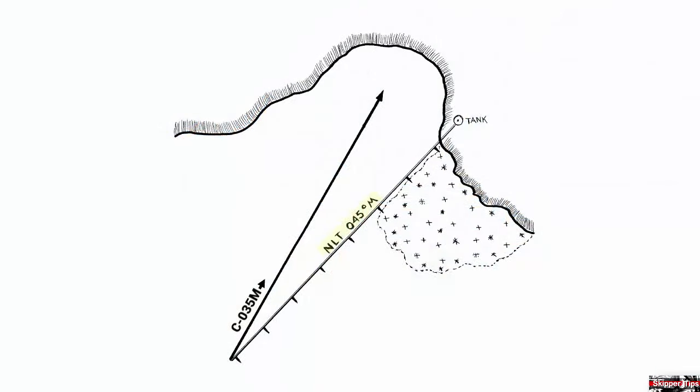First thing you want to do is always choose an object forward of the danger. Here you can see our shoal is on the starboard side, and we choose a tank on the far side of the shoal. Next thing you want to do is draw a line straight back from that object, and we've taken that prominent object, or the tank, and we draw a line straight back toward our course line.